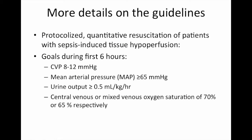More details on goals during the first six hours: a central venous pressure of between 8 and 12, a mean arterial pressure target of greater than or equal to 65 millimeters of mercury, a urine output of greater than 0.5 milliliters per kilogram per hour, and targets for central venous or mixed venous oxygen saturation.